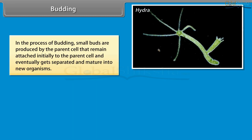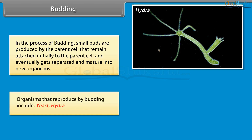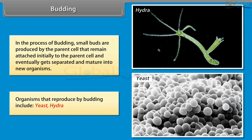In the process of budding, small buds are produced by the parent cell that remain attached initially to the parent cell and eventually get separated and mature into new organisms. Organisms produced by budding include yeast and hydra.